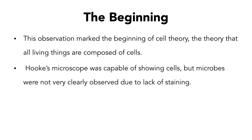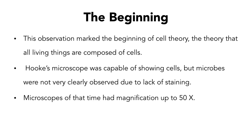Hooke's microscope was capable of showing cells, but microbes were not very clearly observed because there was no staining available at that time to increase the contrast between microorganisms and the background, and the microscopes available gave maximum magnification up to 50 times.